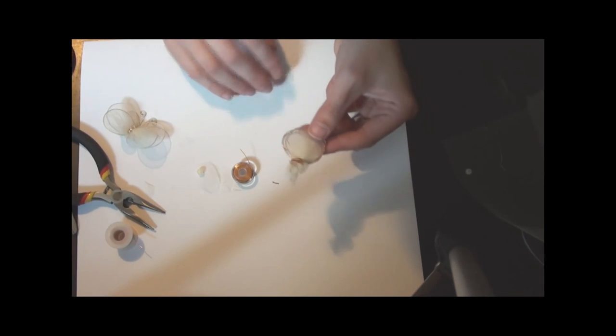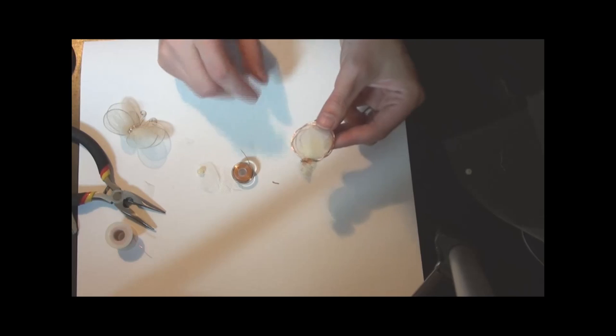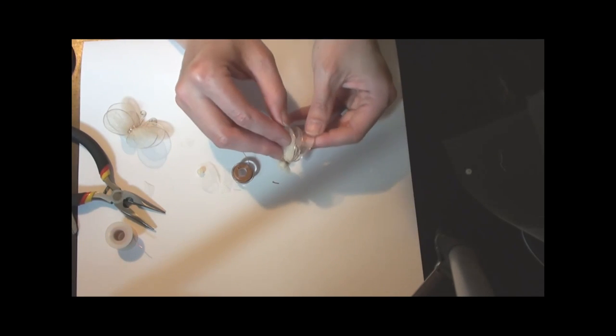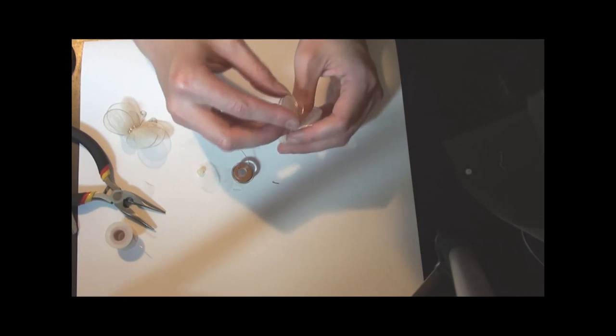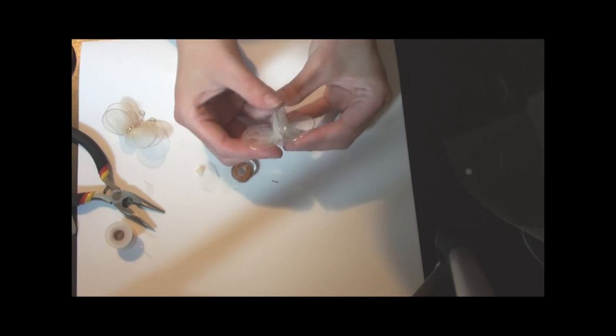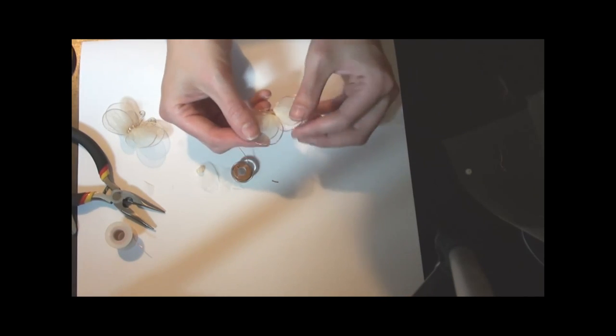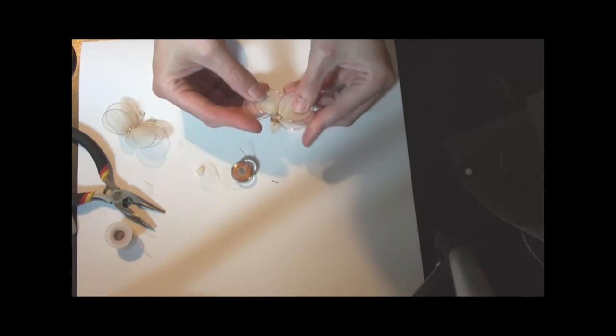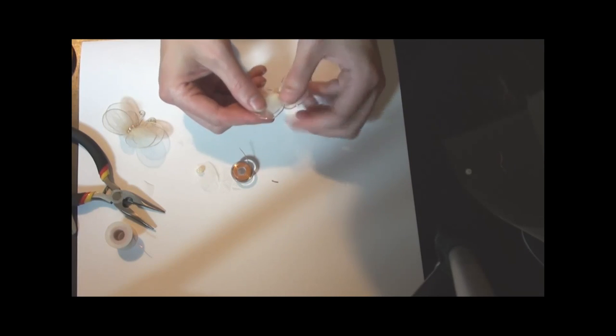And after you have all four wrapped up together, this is where you can start separating the wings and where your butterfly is really going to start taking shape. You'll pull the back two and then the front two. And your butterfly is basically formed. Now we just have a couple finishing pieces. And you'll have your butterfly.